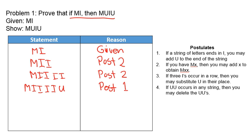Now we know MIIIIU is true. We can't apply postulate one since we don't have an I at the end. We could apply postulate two, but that gives a very long expression and doesn't seem to be getting us toward the objective. We could apply postulate three — we have three I's in a row. Postulate four still does not apply. I'm going to apply postulate three to those three I's, substituting a U in their place, so MIIIIU becomes MUIU by postulate three.